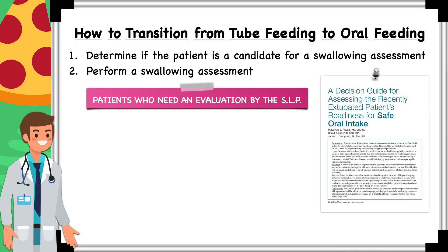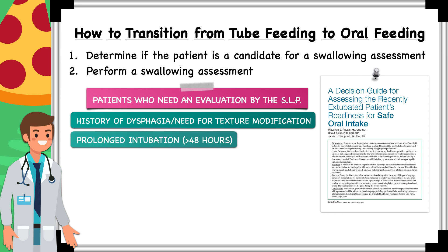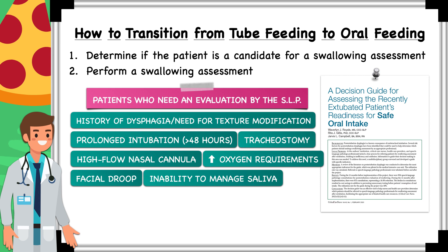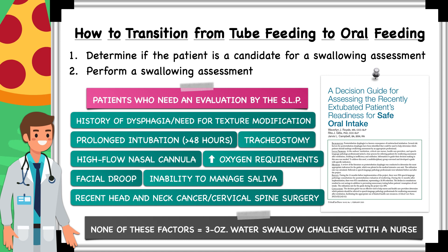According to a recent decision guide for assessing a patient's readiness for oral intake after extubation, patient factors that should trigger an SLP evaluation in the hospital include a history of dysphagia and need for diet texture modification, prolonged intubation of greater than 48 hours, the presence of a tracheostomy, impaired respiratory function requiring high flow nasal cannula or escalating oxygen requirements, a facial droop or inability to manage saliva, and recent head and neck cancer or cervical spine surgery. Patients with none of these factors can undergo a three-ounce water swallow challenge with a nurse or another trained clinician.